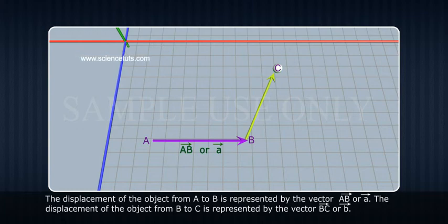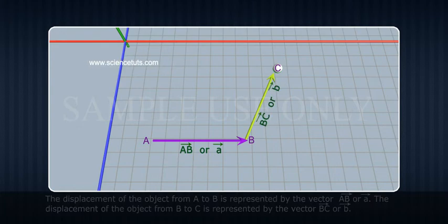The displacement of the object from B to C is represented by the vector BC or vector B.